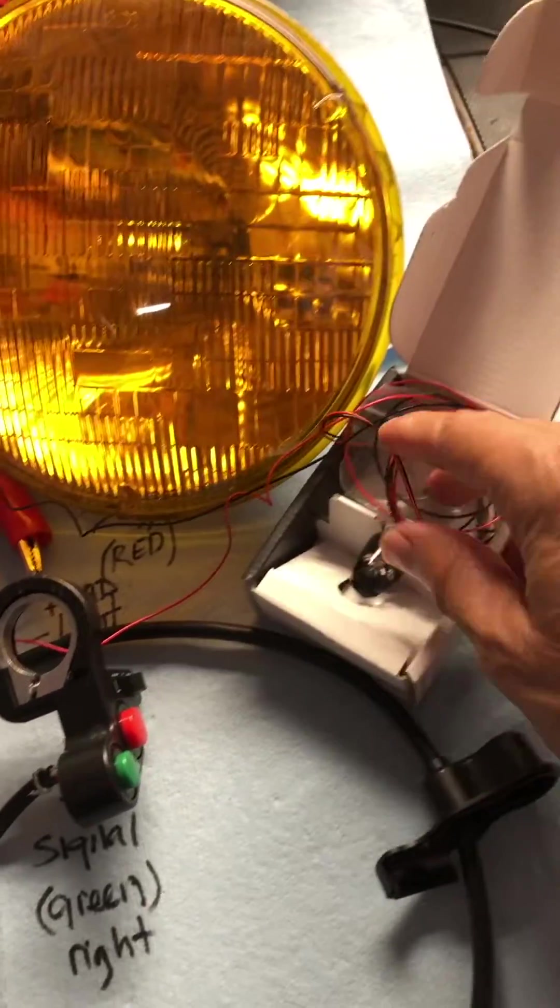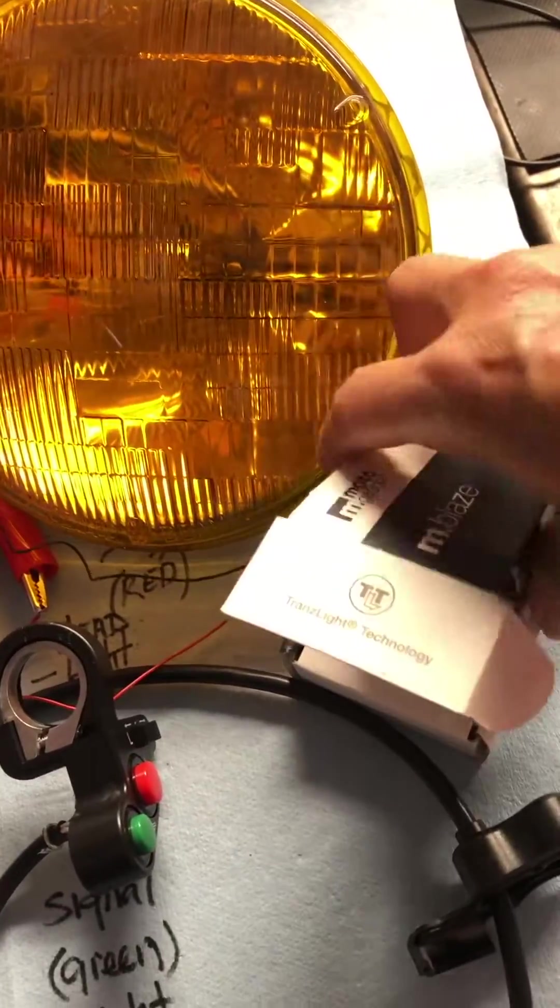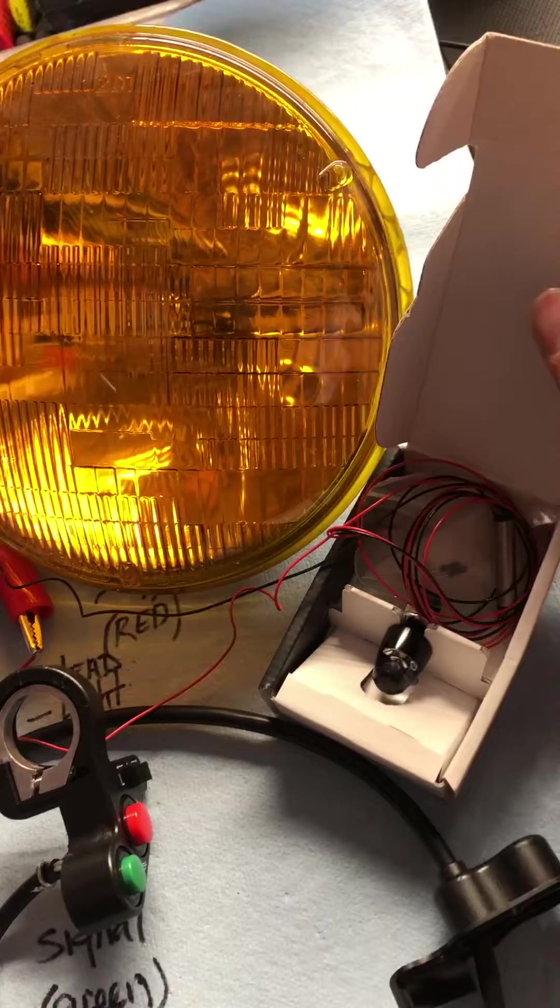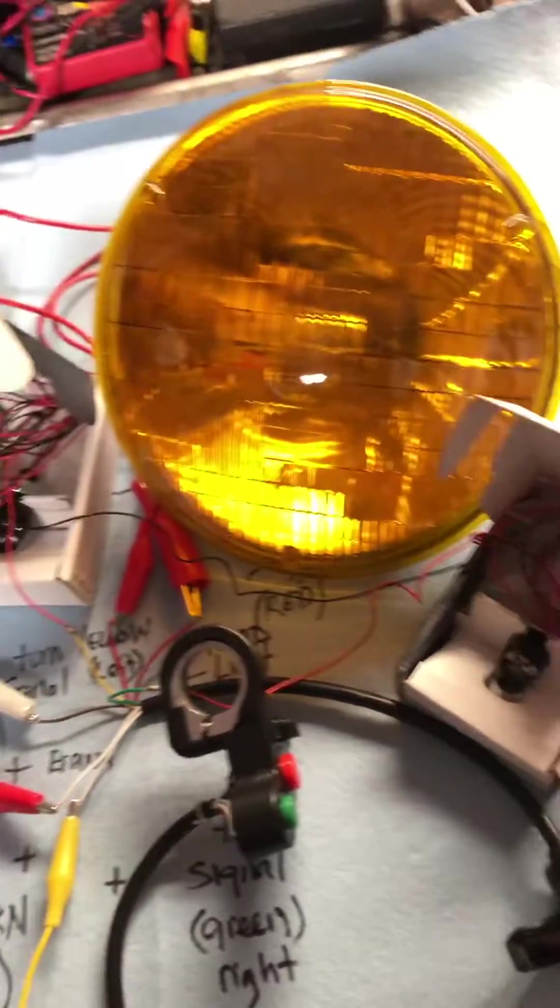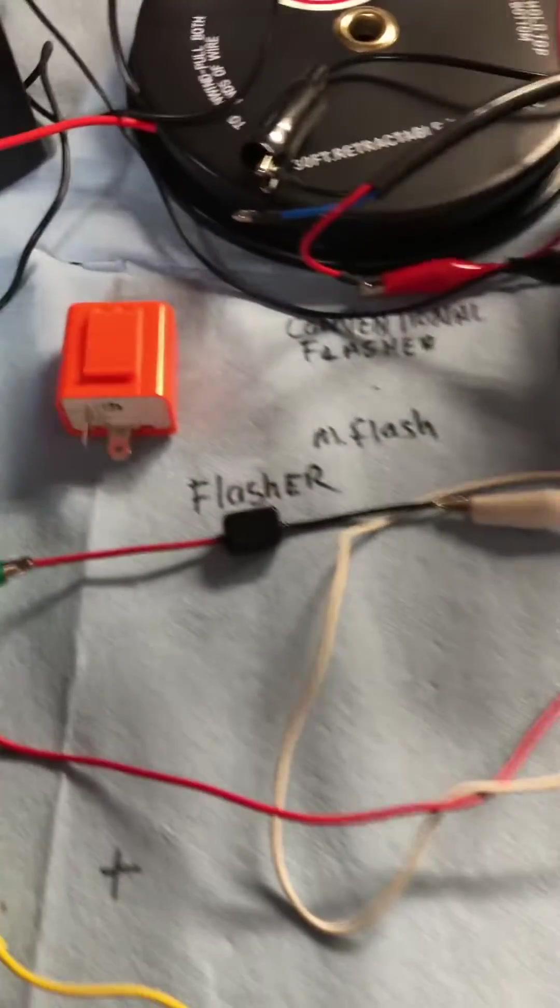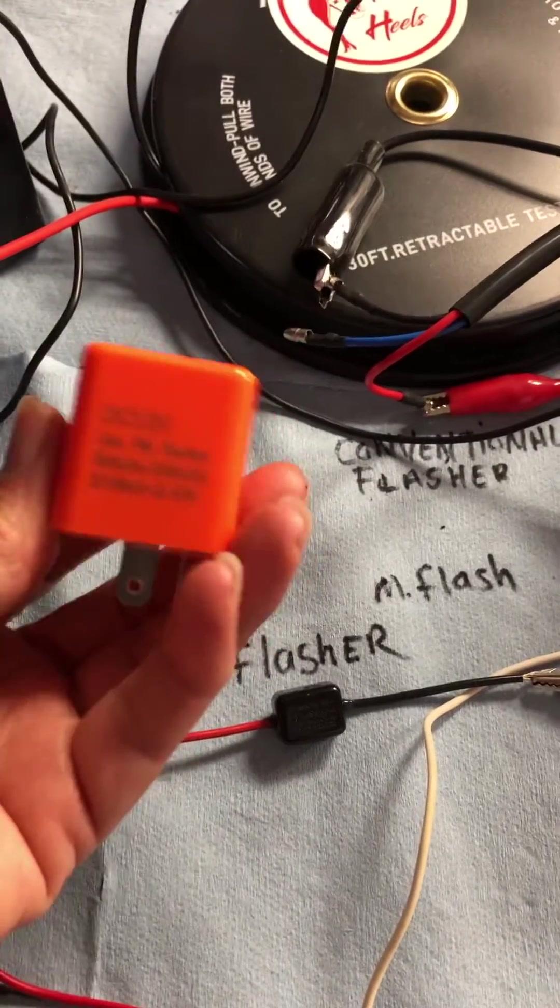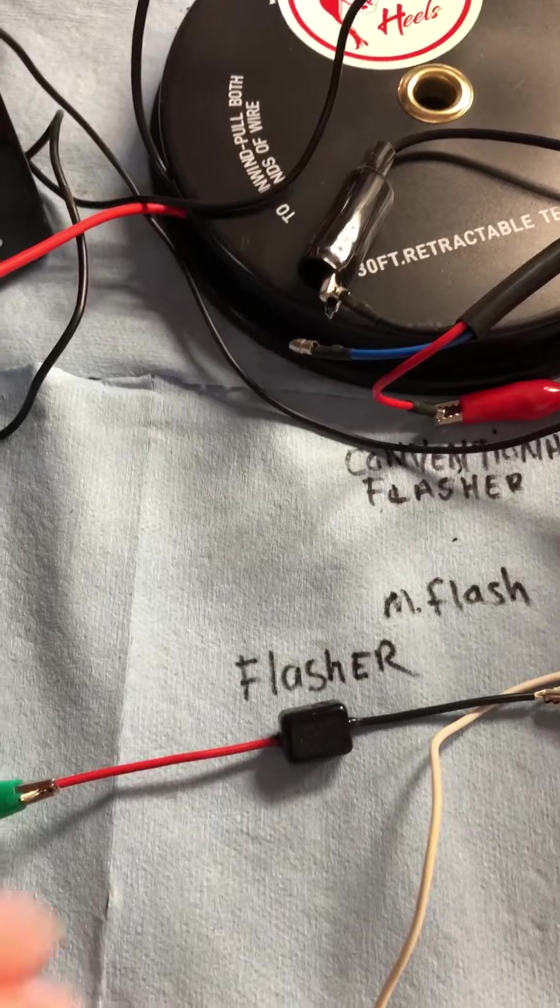I've got these Moto gadget turn signals for about 55 bucks each, smaller than my thumb. I've used them before, they're very bright. I replaced this conventional flasher, too big, it's out of here.